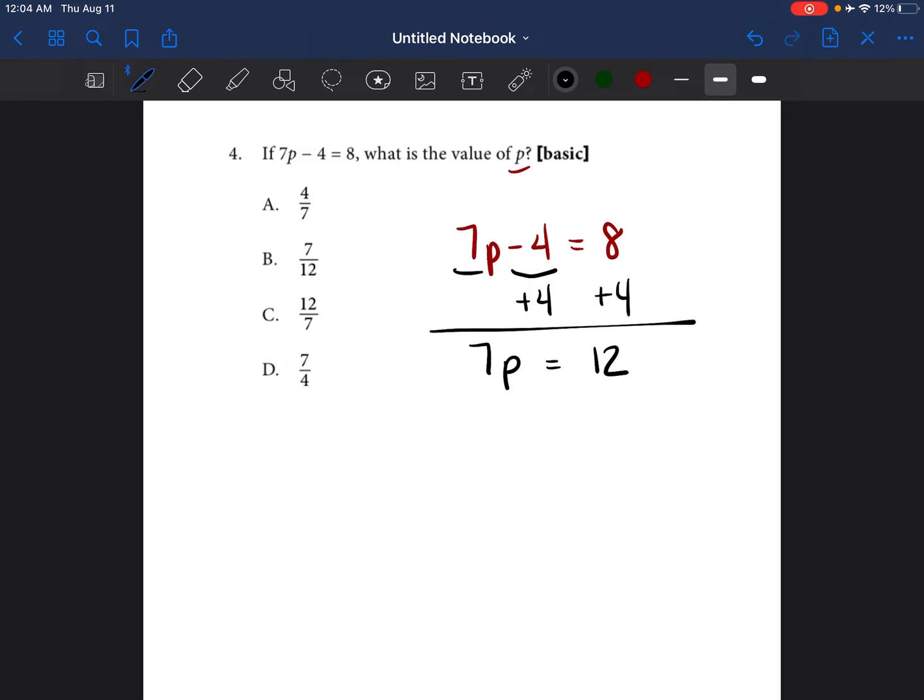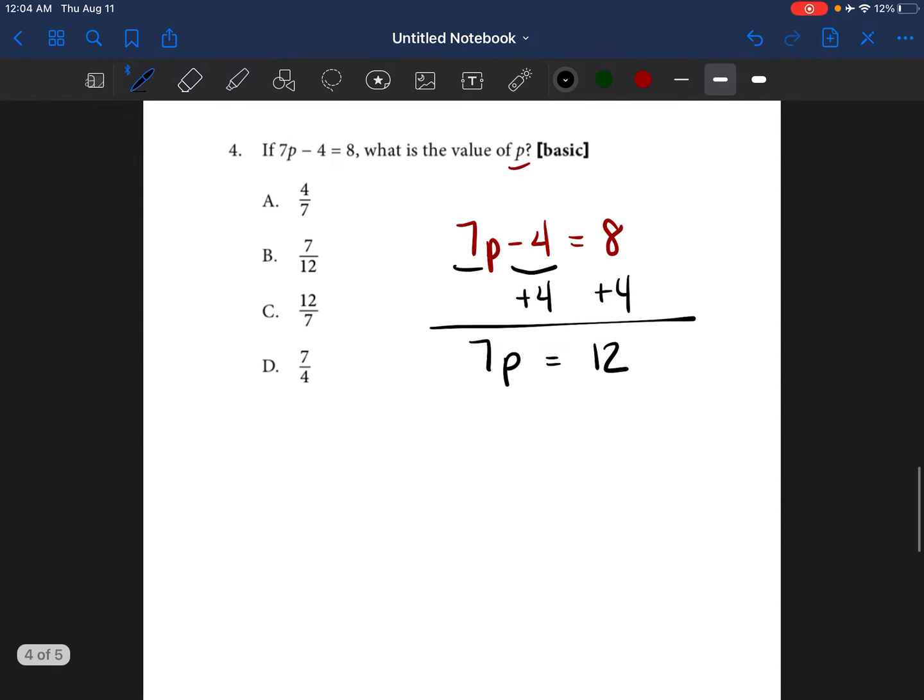Okay, now what's causing the P to not be by itself is the seven. Right now, the seven is written right next to the P, so they're being multiplied. So in order to get rid of the seven, you have to do the opposite of what's happening.